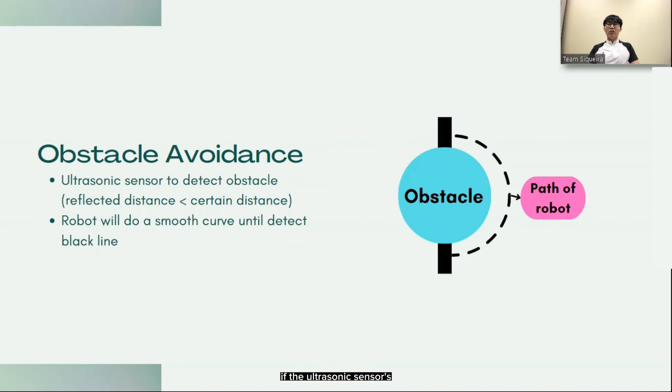To avoid obstacles, if the ultrasonic sensor reflected distance is less than certain threshold, the robot will turn and do a smooth curve until it detects black line and continues line following. This ensures that the robot can navigate around obstacles without getting lost or stuck.